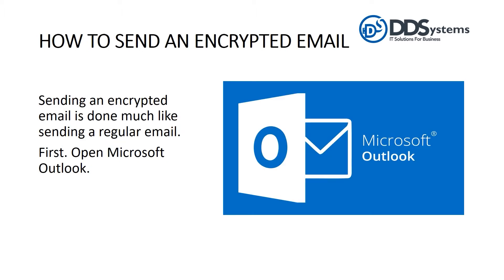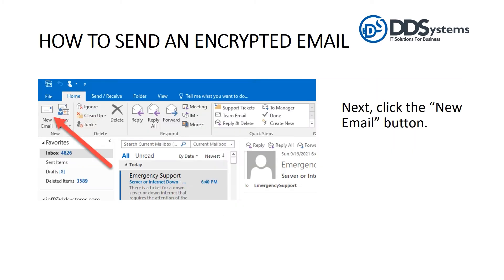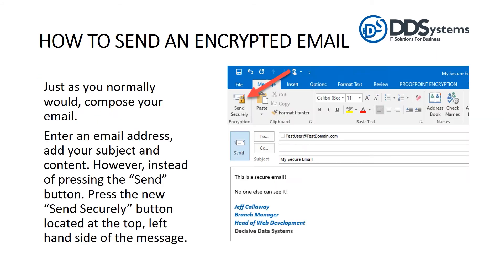Sending an encrypted email is done much like a regular email. First, open Microsoft Outlook. Next, click the New Email button just as you normally would. Compose your email, enter an email address, add your subject and content.